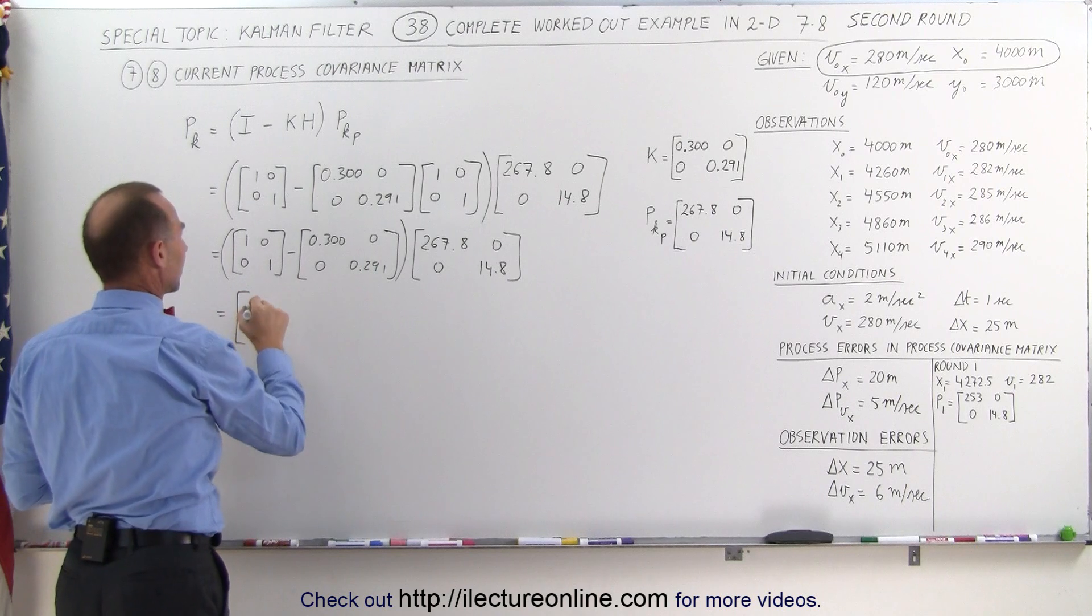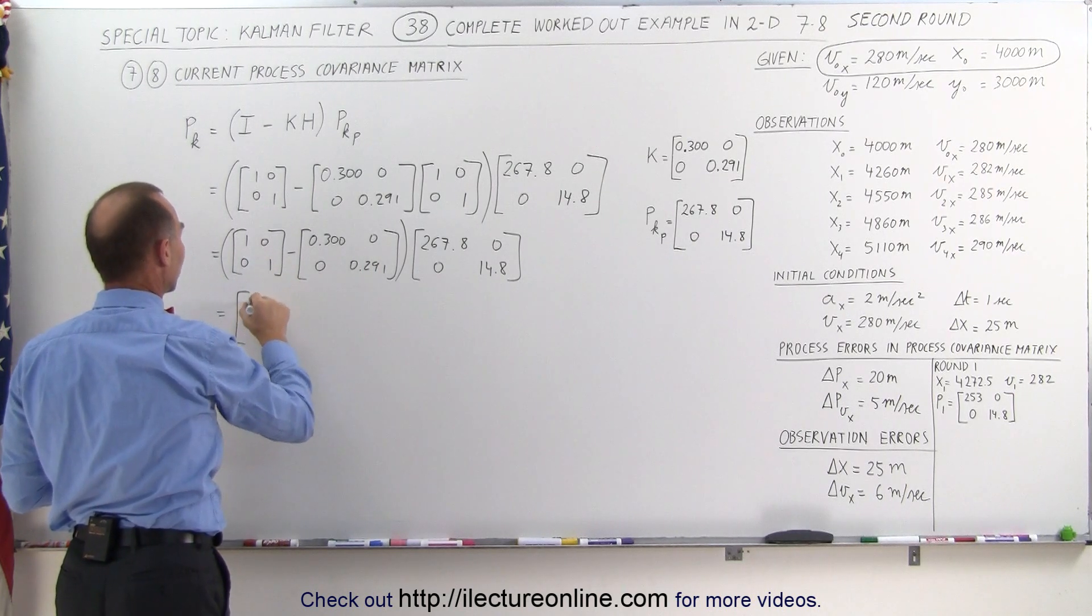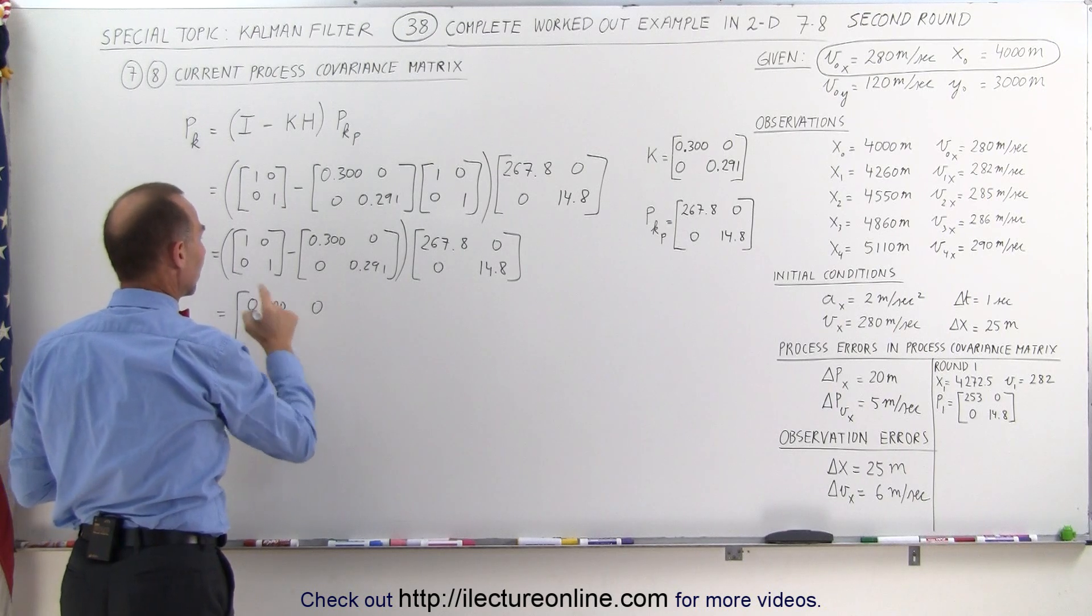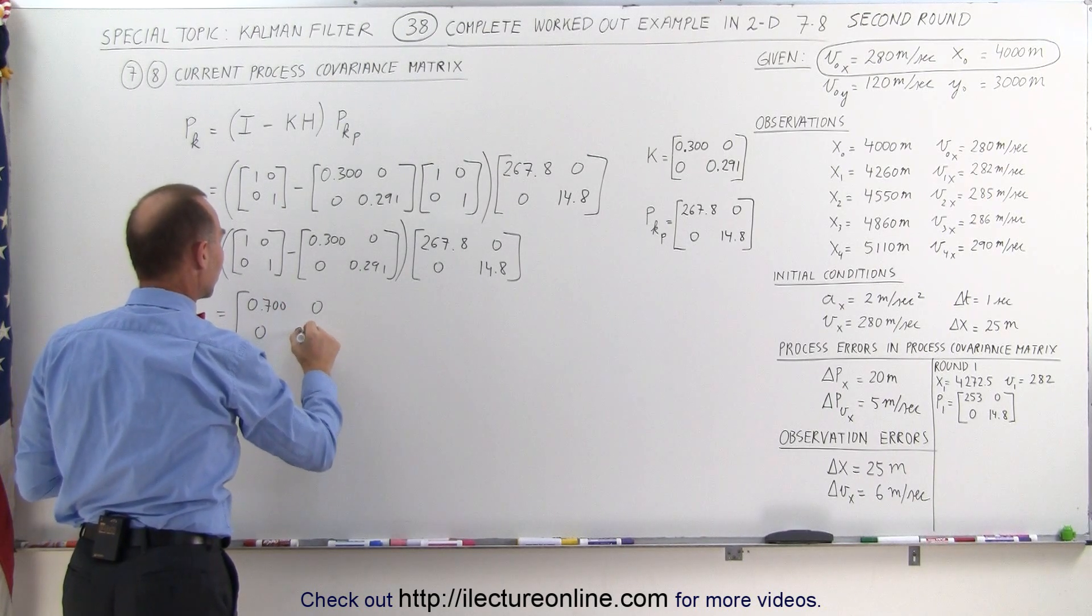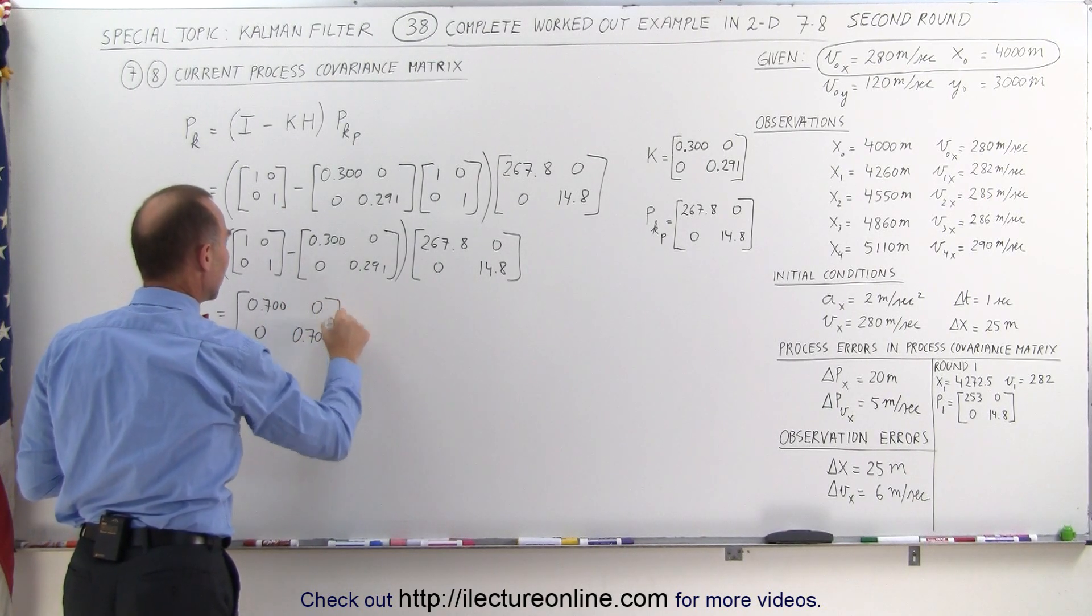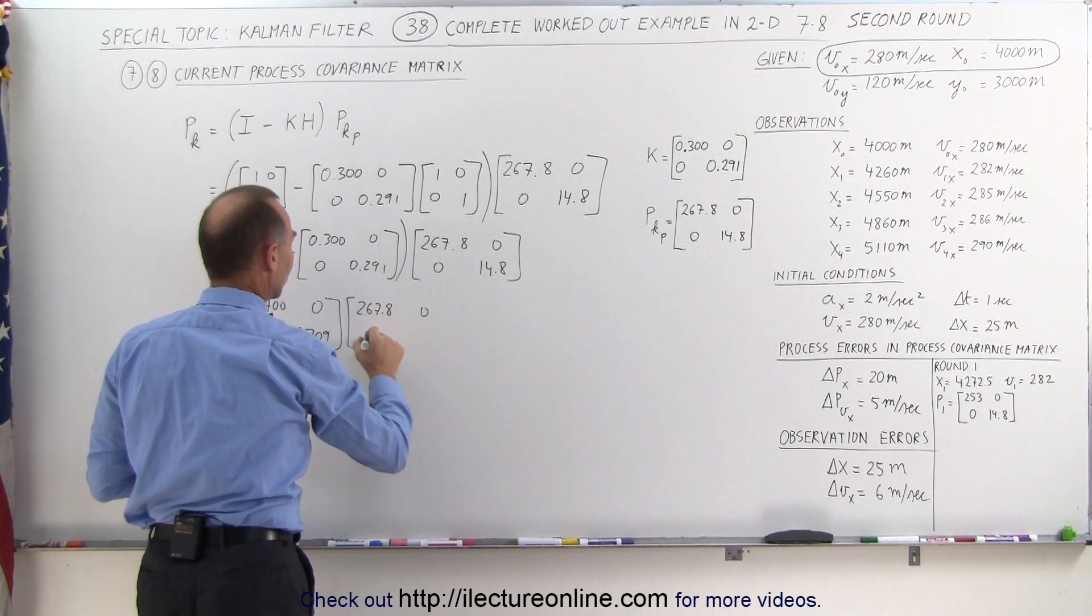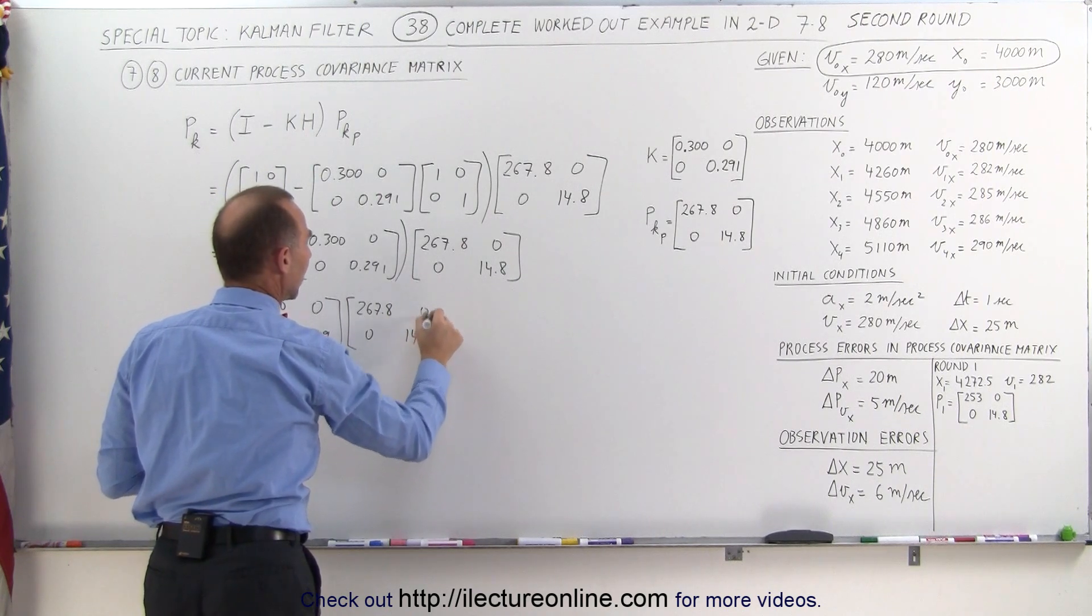So when we subtract that from that, we get the following matrix. We get 1 minus 0.3, which is 0.700, 0 minus 0, 0 minus 0, and 1 minus this gives us 0.709, then we multiply that times 267.8, 0, 0, and 14.8.